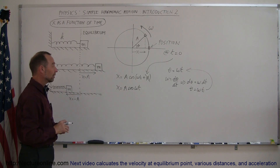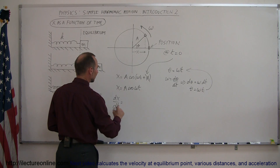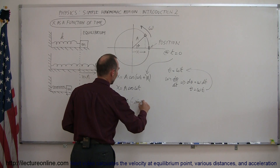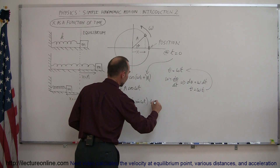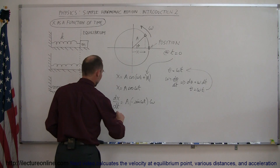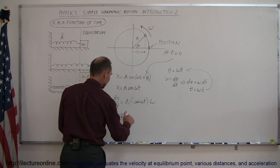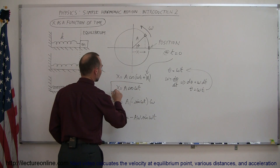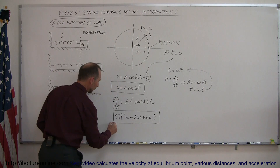If we take the derivative dx/dt, the derivative of cosine is negative sine, so we get minus a times sine of omega t, and then the derivative of the angle with respect to t gives us omega. So dx/dt equals minus a omega sine of omega t. Since dx/dt is the velocity, the velocity as a function of time is v equals minus a omega times sine of omega t.